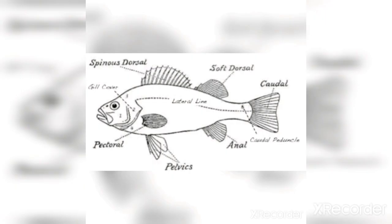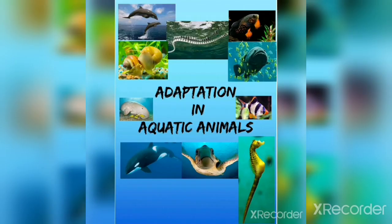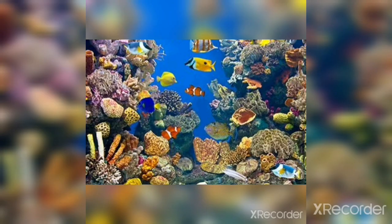The last adaptation is the lateral line system. Fishes possess sense organs in the lateral line which can detect changes in the pressure of water currents. I hope you all understood the topic. You can suggest topics for my next videos in the comment section. If you like this video, please like, share, comment, and subscribe to my channel, and hit the bell icon to get notified whenever I upload a new video. Thank you.